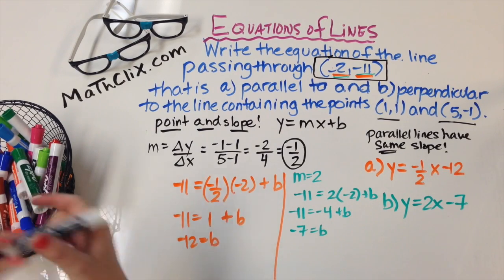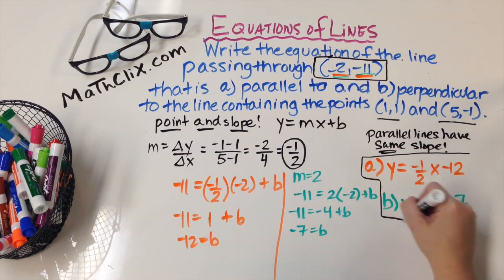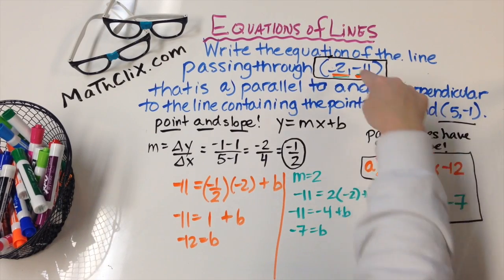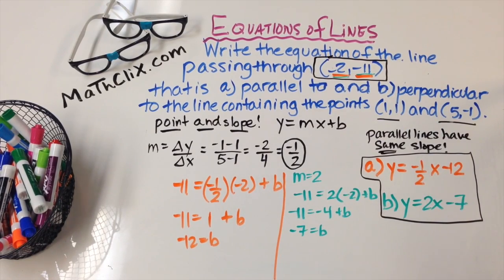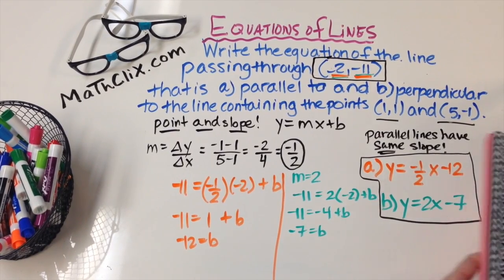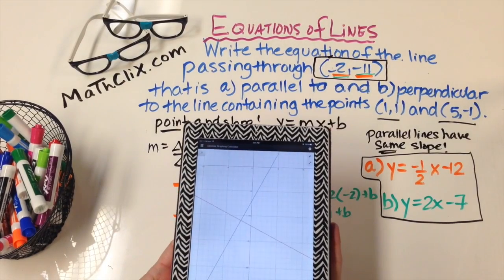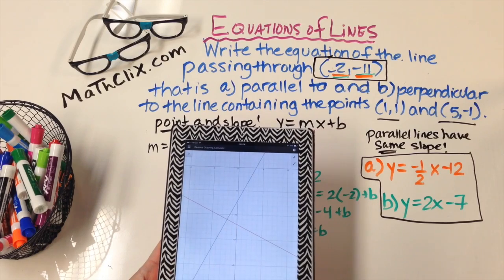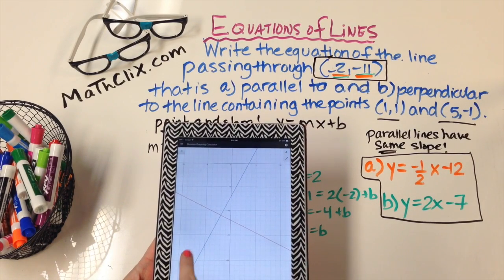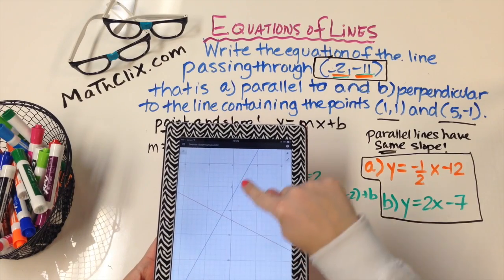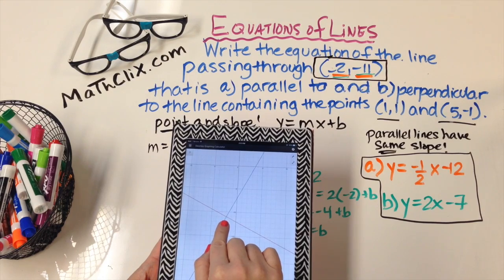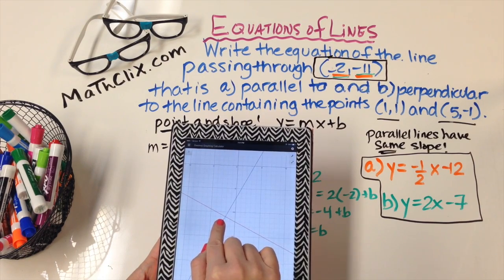If we were to graph these two lines, we should see that they are perpendicular and they should cross through the point negative 2, negative 11. On the iPad I have a graphing calculator app, and here are the two lines. The red line is part a and the blue line is part b. You can see that they cross, they look perpendicular, and they're crossing at the point negative 2, negative 11.